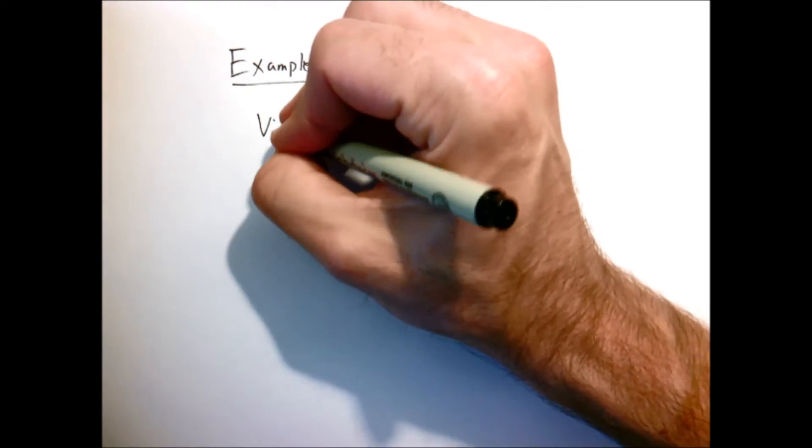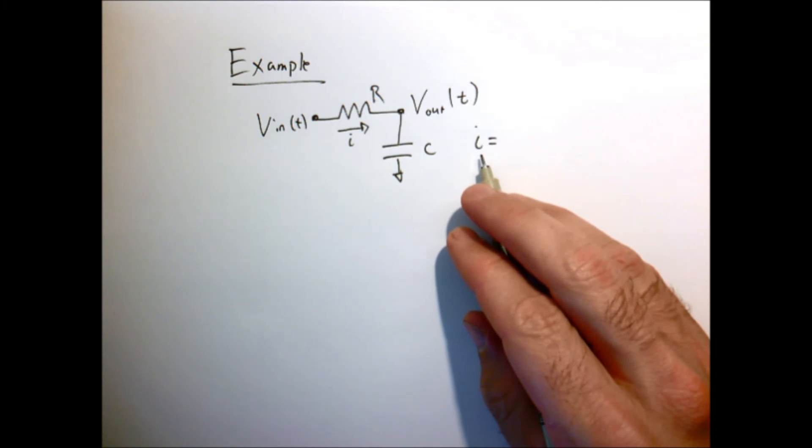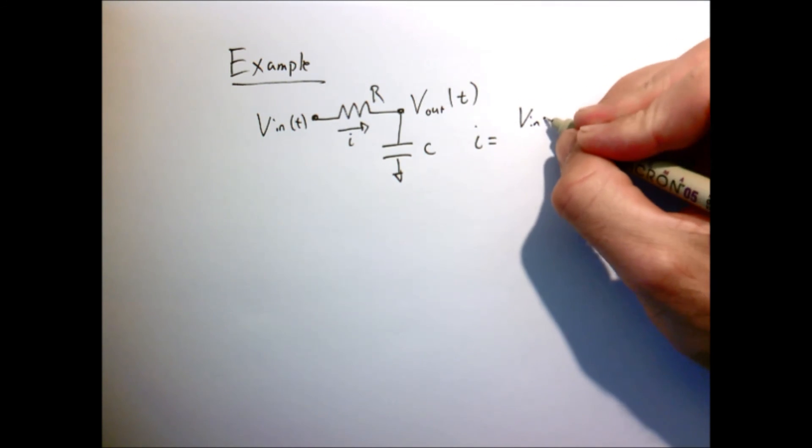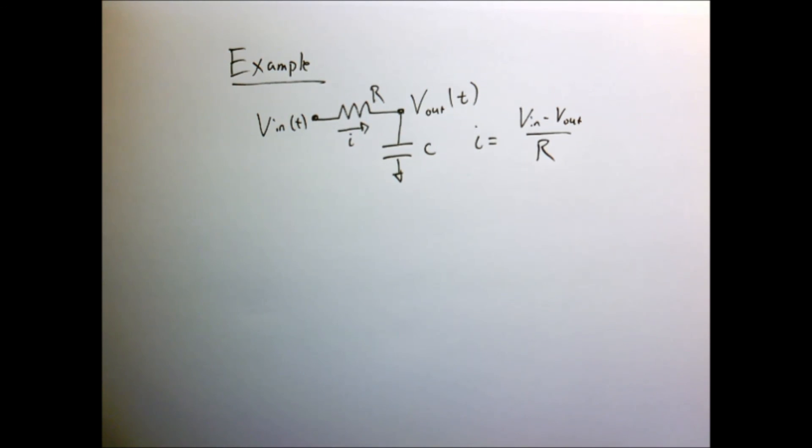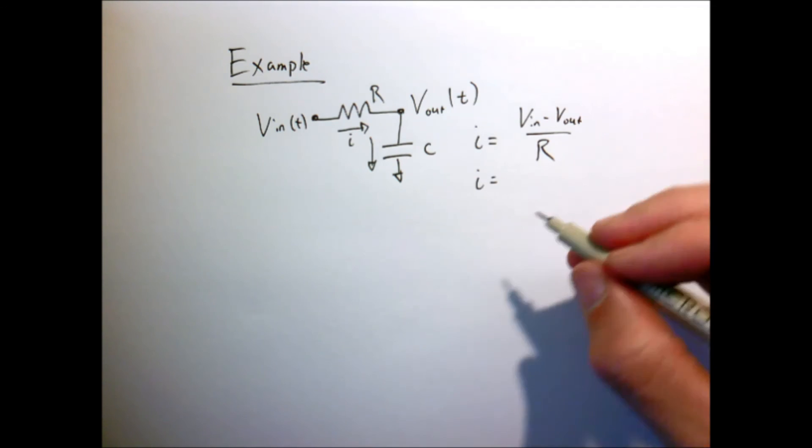So now let's work a simple example. I'm going to have a simple resistor and capacitor in series. So this is an example that we've worked before. So the current I, so now you see why we use J for the complex number, is given by Ohm's law, VN minus V out over R. That current, which has to be the same, because what goes through the resistor must go through the capacitor, is also equal to C times DV out DT.